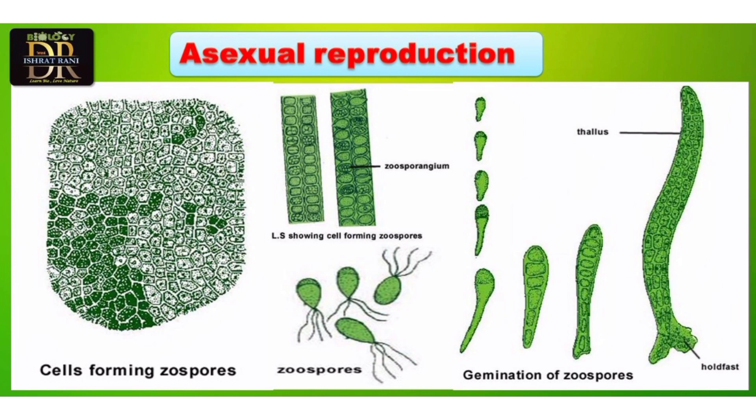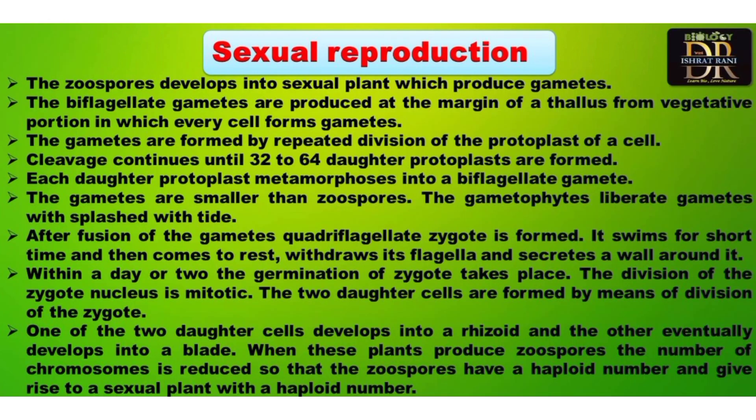The formation of zoospores continues until all the cells are used and nothing remains in the thallus. These zoospores are liberated when the thallus is reflooded by the tides during morning tide. All the zoospores formed are quadriflagellated, having four flagella, and when these spores mature they will form a complete Ulva plant again.